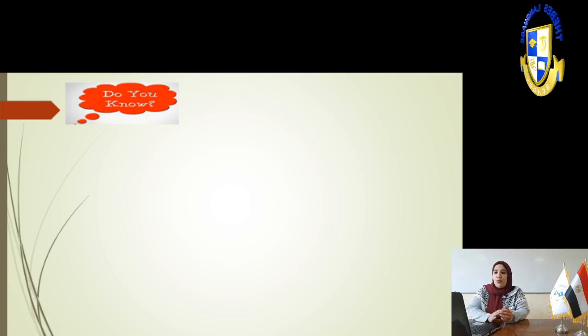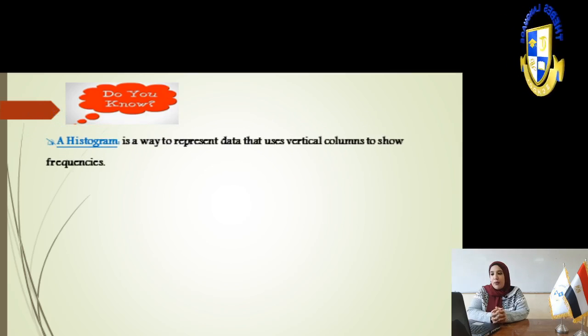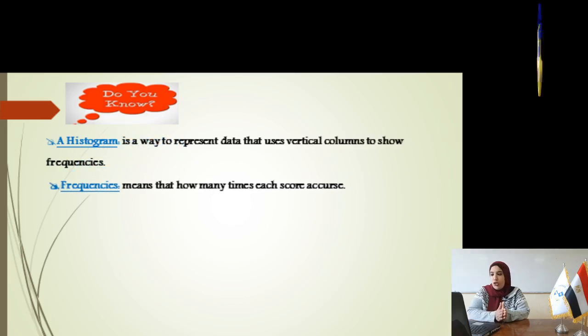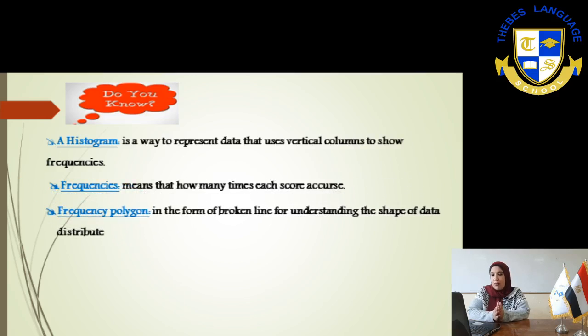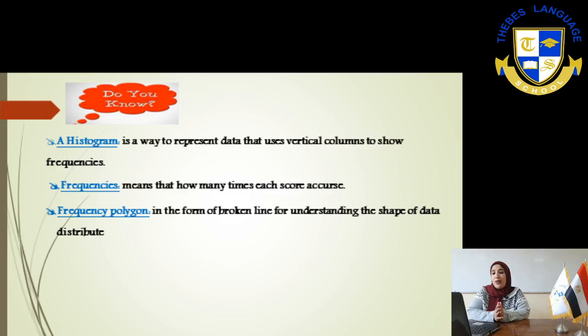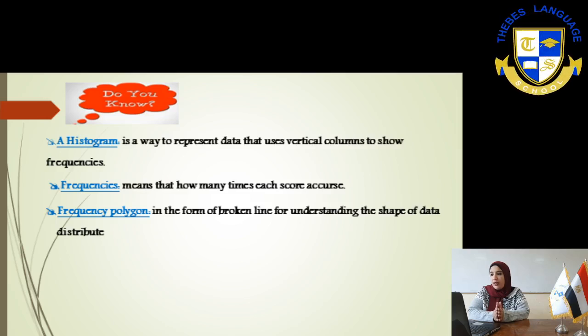Also as you know, a histogram is a way of representing data in which vertical columns show the frequency, and the frequency means how many times the score happens. When I'm talking about frequency polygon, it is the same way of breaking the following line to understand the shape of data distributed.